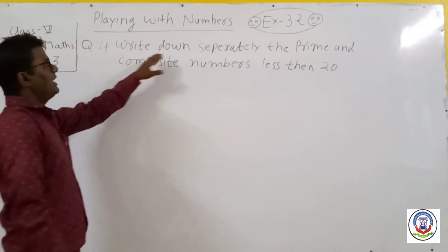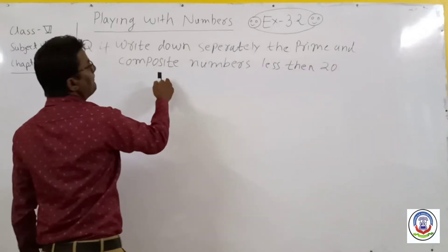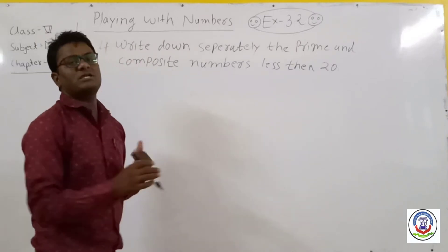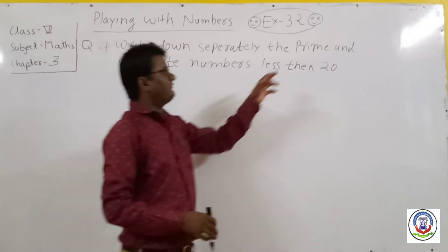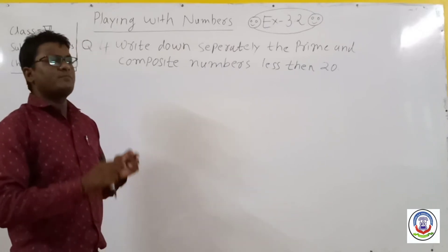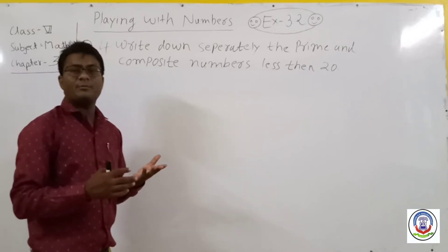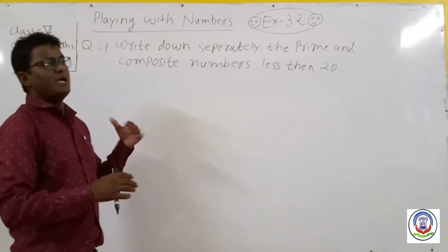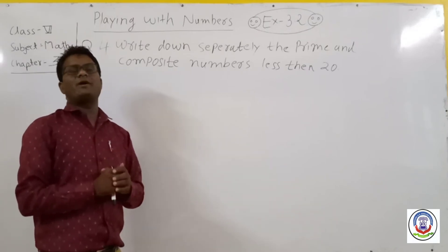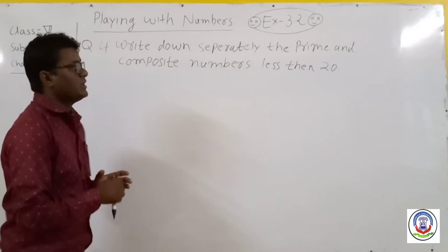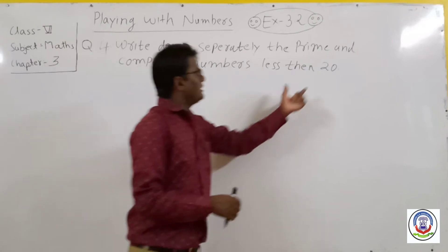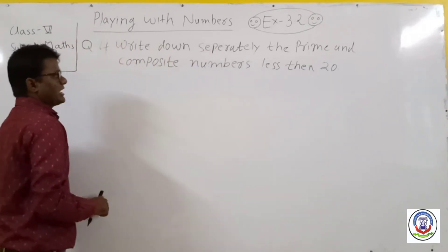In question 4, we have to separately list the prime and composite numbers less than 20. In the previous lecture, we saw what prime numbers and composite numbers are. Prime numbers are those numbers which have only two factors — one and the number itself. Composite numbers are those which have more than two factors. So in this question, we need to write prime and composite numbers separately, taking numbers less than 20.